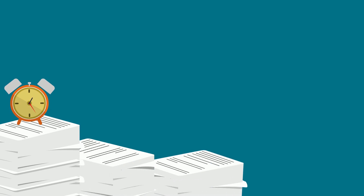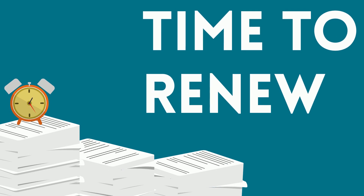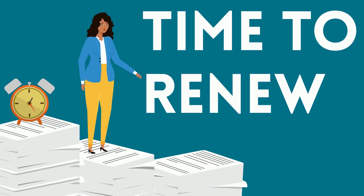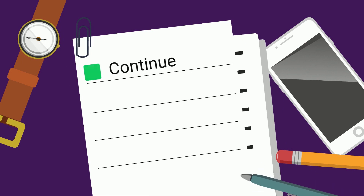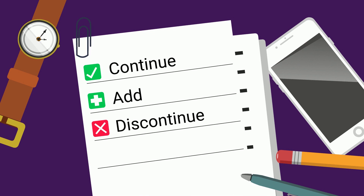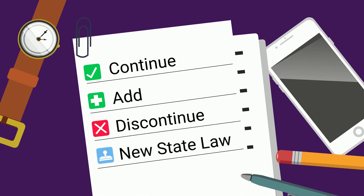So, every five years, ACCESS must submit a waiver renewal to explain to CMS how the state will provide services to enrolled Medicaid members. In the renewal, ACCESS asks CMS to continue current programs, add new ones, or discontinue programs. Sometimes programs are added due to new state laws.